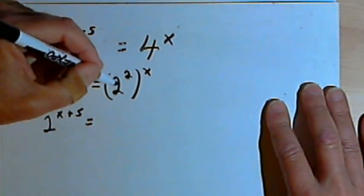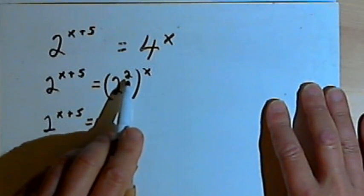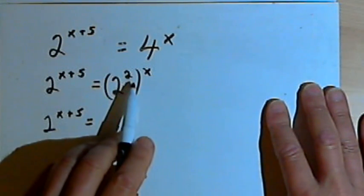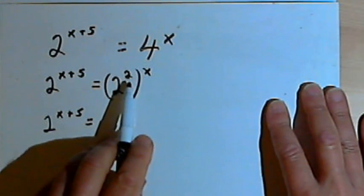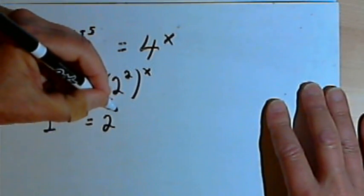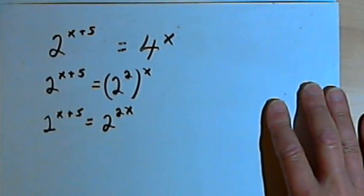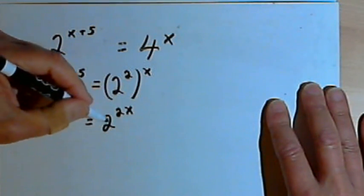The next step would be to take 2 to the x plus 5, and then take that 2 squared to the x and multiply the 2 times the x. Since when we have a power raised to a higher power, we multiply the exponents. So that's going to become 2 to the 2x.